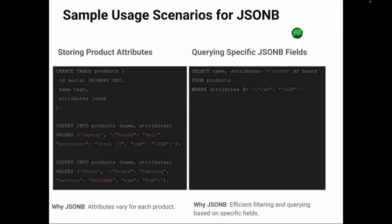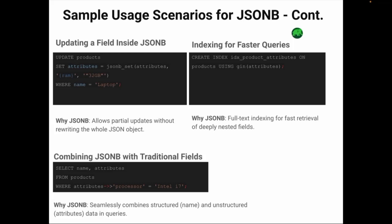When storing product attributes, you can easily insert JSONB data without worrying about predefined structures. JSONB also allows for efficient querying — for example, you can search for products based on specific attributes like RAM or brand. One of the coolest features is the ability to update specific fields in your JSONB data without affecting the entire object, enabling partial updates that save time and resources. If you're working with large datasets, you'll want to index your JSONB fields for faster query performance — GIN indexes make searching incredibly fast.